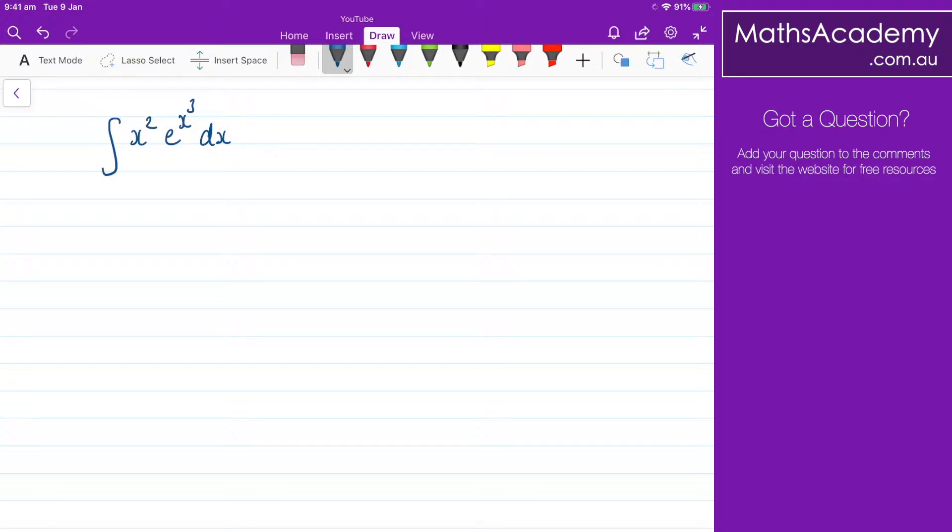Now, if you notice here, what we have, we have this x cubed term, and I know when I differentiate that, I will get an x squared term. And just from experience, I know that a substitution will work here. So my substitution is going to be let u equal x cubed.